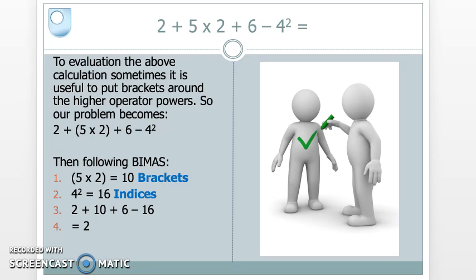So now we can perform the calculation properly. But again, I would say it's useful sometimes to put brackets around those higher order terms so that you can see what calculation you're going to be doing first. In this particular case, I'll put brackets around the higher multiplication sign there, higher than the pluses and the minuses. So therefore, I'm going to do 5 × 2 first, because my BIDMAS tells me brackets first. Then I'm going to work out the 4², because BIDMAS tells me to work out any indices. So I'll end up with the final calculation of 2 + 10 + 6 - 16, giving me a final answer of 2.